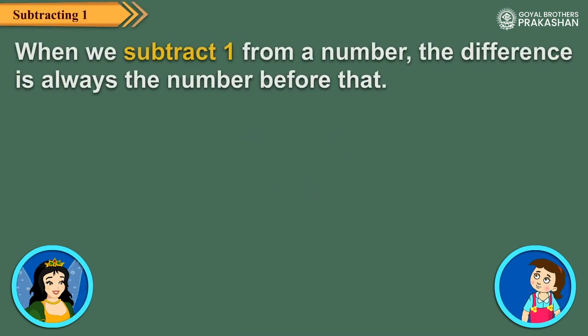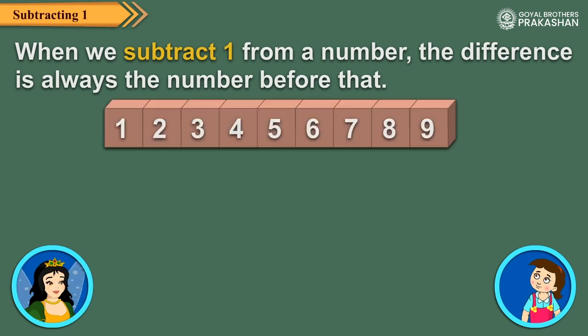Also, when we subtract 1 from a number, the difference is always the number before that. So, 6 minus 1 is equal to 5, 5 minus 1 is equal to 4, and 4 minus 1 is equal to 3.